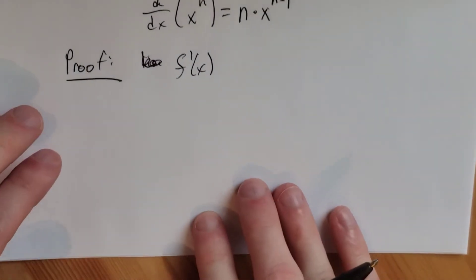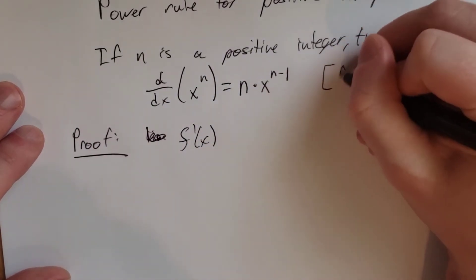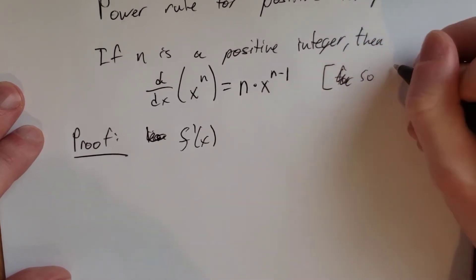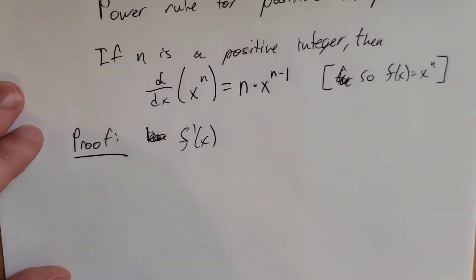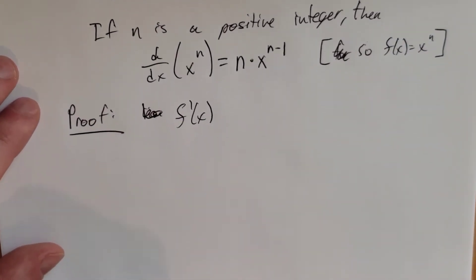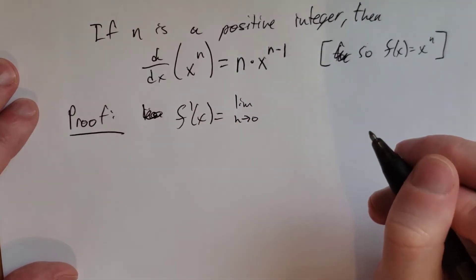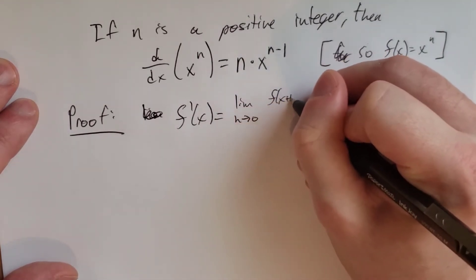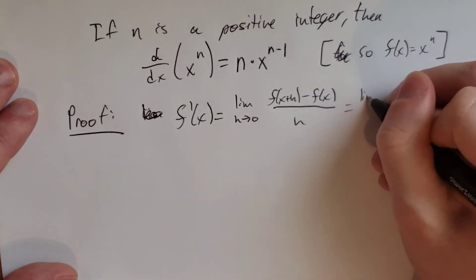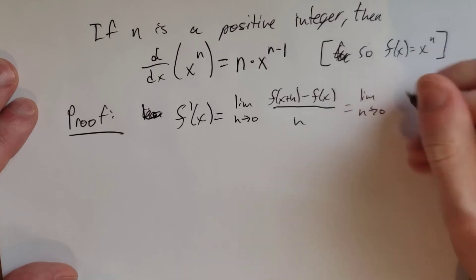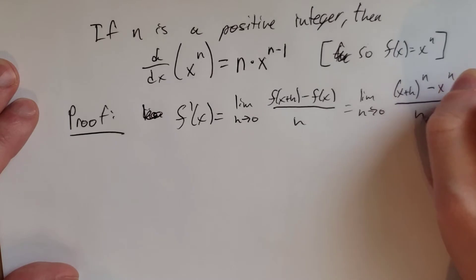If f of x is defined as x to the n, then f prime of x is the limit as h goes to zero of f of x plus h minus f of x all over h, which is the limit as h goes to zero of x plus h to the n minus x to the n all over h.